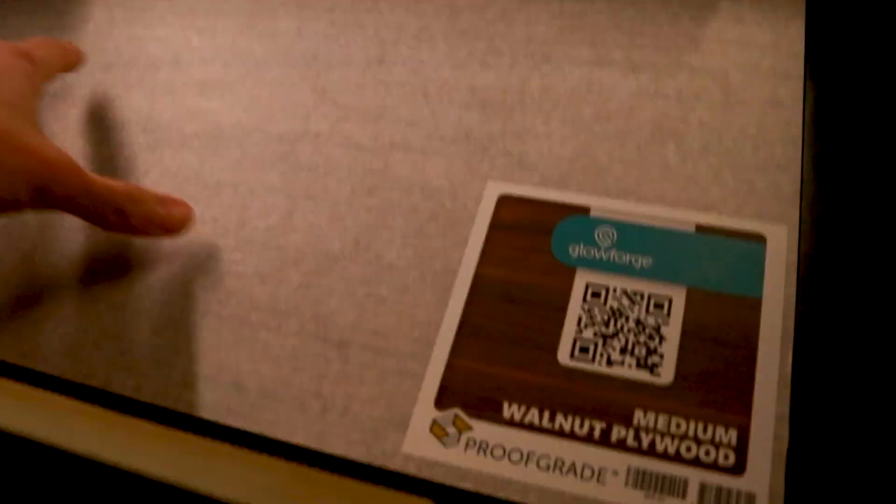Starting the process of laser cutting, I place the walnut plywood into my Glowforge laser cutter and I start laser cutting every component.